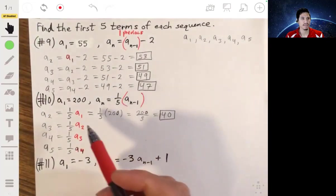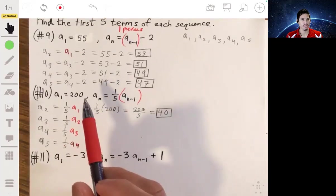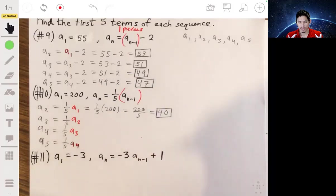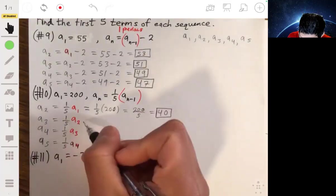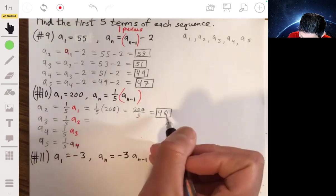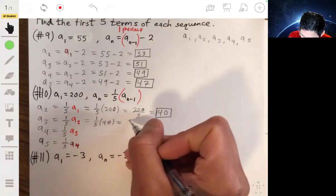So these are called recursive formulas, because you can't find a5 unless you know a4. And you can't find a4 unless you know a3. You can't find a3 unless you know a2, and so forth. So they're usually easy to catch on to the pattern and calculate, but the annoying thing is that you have to calculate all of them, usually, to get the term that you want. Whereas in the explicit formulas, you can just plug in a number and find any term in the sequence, which may take a little longer to calculate, but you can find literally the 100th term by just plugging in 100. Anyway, so then going through this, a3 is 1/5 times a2, a2 is 40, so this is 1/5 times 40, or 40 over 5, which is just 8.